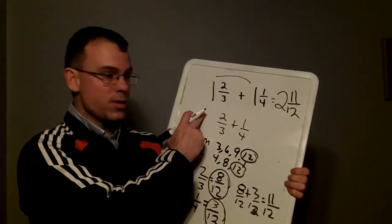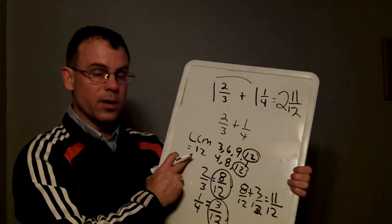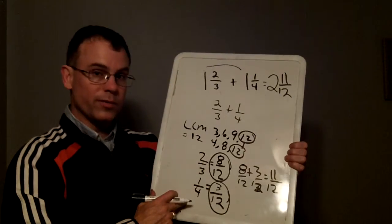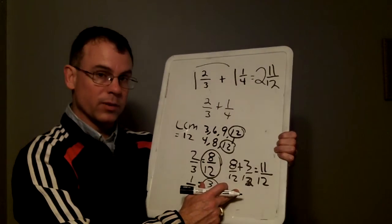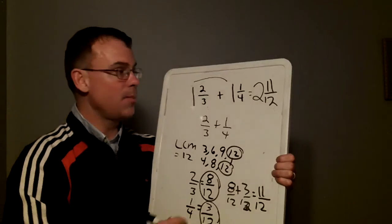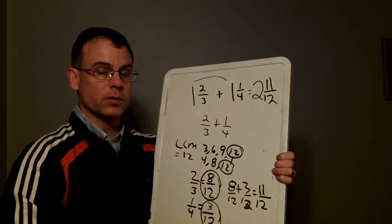Combine the whole numbers. Find a new denominator by finding the LCM. Find two equivalent fractions, and finally combine your end results. Remembering to record your final answer at the top, two and eleven twelfths.